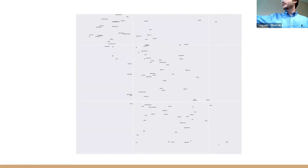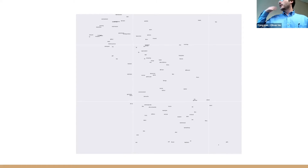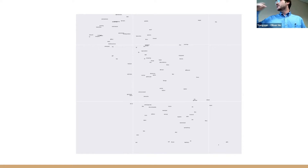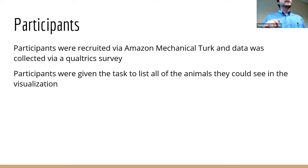Users were able to navigate and see — and supposedly the logic of embeddings is that terms closer together have more semantic similarity, which is what Owl2Vec is supposed to generate. There are a lot of factors that can distort that, not least of which is the dimensionality reduction — there's a lot of feature loss that happens. I recruited participants with Amazon Mechanical Turk and collected data with a Qualtrics survey. The task participants were given was to list all of the animals they could see in the visualization — I kept it as simple as possible.